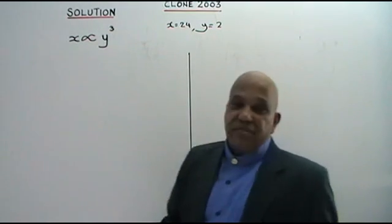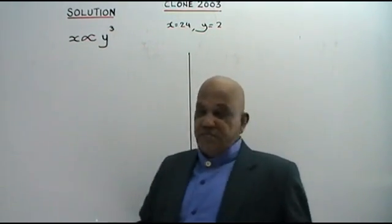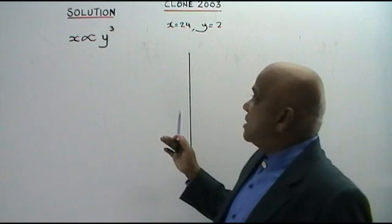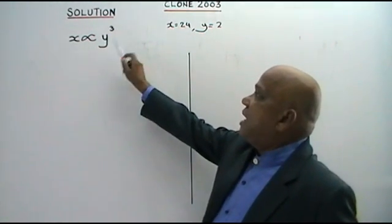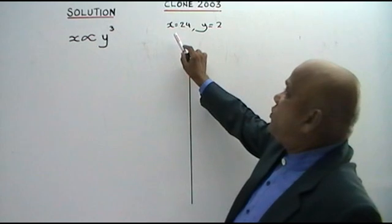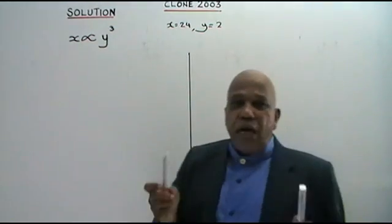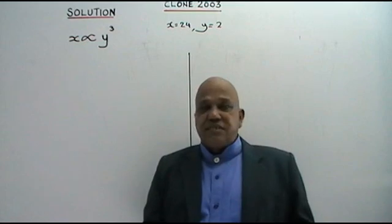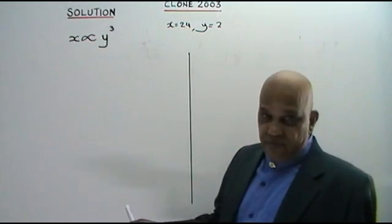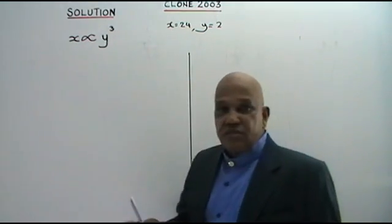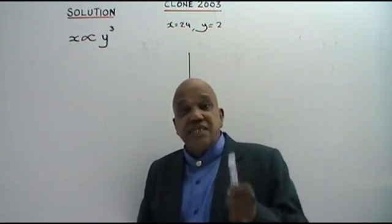Here I have a clone question based on the year 2003. You are given X varies as Y cubed, and when X equals 24, Y equals 2. You are asked to express X in terms of Y.